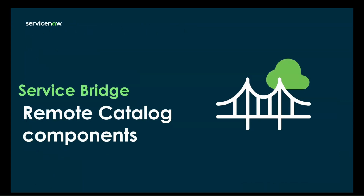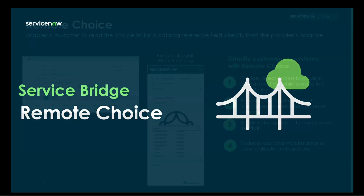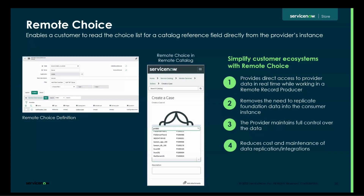Moving on to the different features — we're going to go over Remote Catalog components first. These are some of the sub-features that support the provider task. The remote catalog and remote task are the three high-level features, and the rest are components that support those. The first component for remote catalog is Remote Choice. Remote choice is a way to deal with reference fields within the remote record producer on the provider instance.